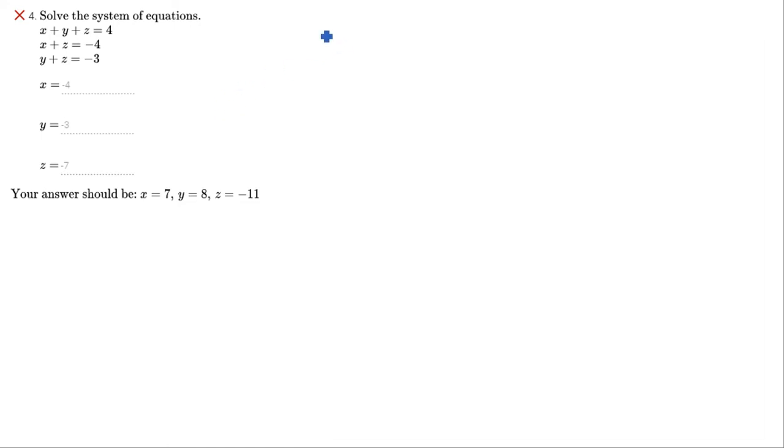So this first equation, let me just write them out here so they're a little bigger. X plus Y plus Z equals 4. X plus Z equals negative 4. I'm just going to write them out there so the variables are all lined up. And we also have Y plus Z equals negative 3. Sometimes it helps maybe even to label your equations, okay? So first equation, second equation, third equation.